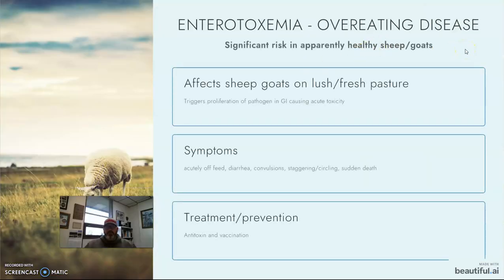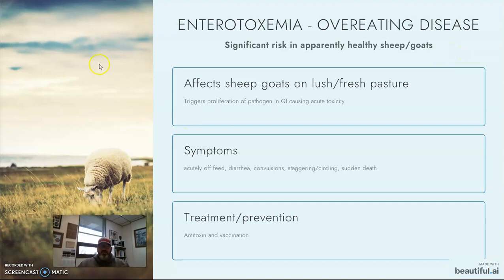Here's a unique one to sheep and goats: enterotoxemia, or overeating disease. It is basically just as it sounds — a nanny goat could literally eat themselves to death. You can trigger a proliferation of the pathogen in the GI tract. This is another Clostridium-related pathogen, and if sheep and goats just go to town eating really lush and fresh pasture, it can trigger that Clostridium pathogen to proliferate well past its control rate and cause the onset of sepsis and enterotoxemia.